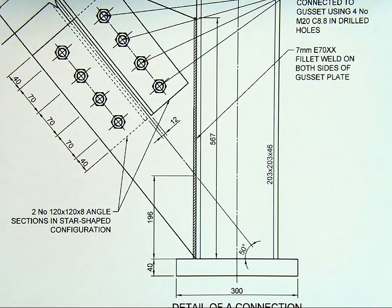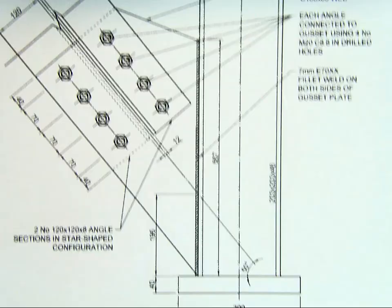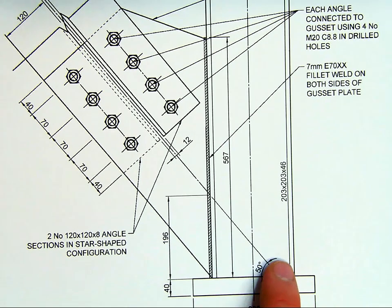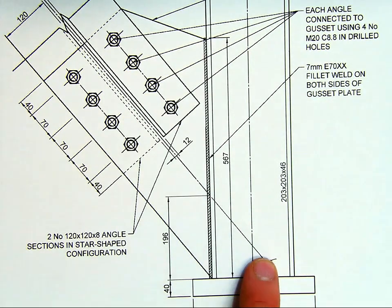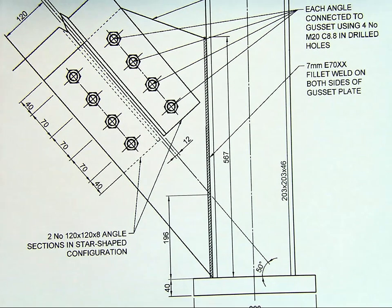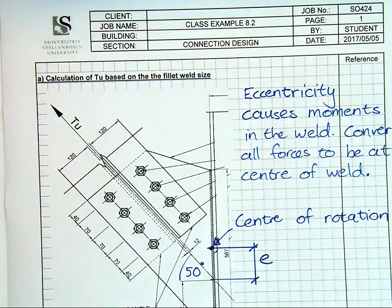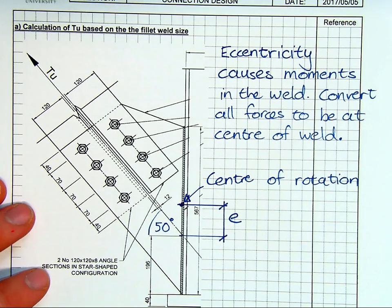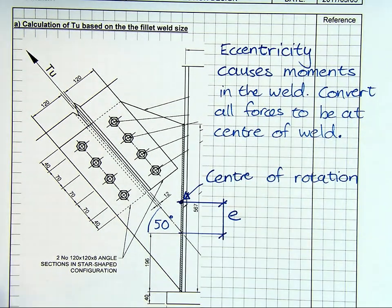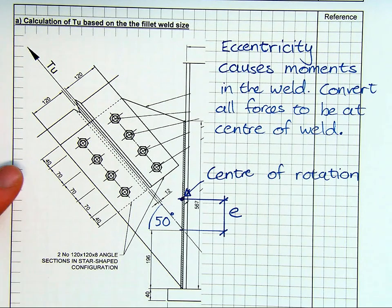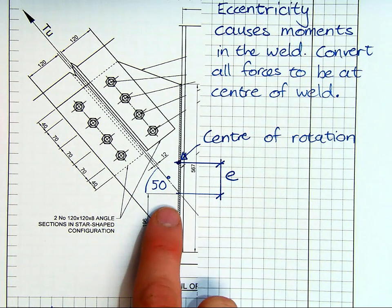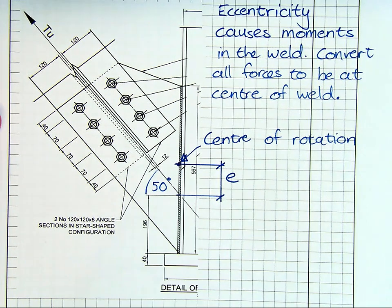Because when the force is applied, this Tu force, applied to the connection, it is applied along this line, which is off the middle of this weld. So it's actually going to twist the weld and cause moments in it. So having a look at our problem, calculation of Tu based on the fillet weld side. Eccentricity causes moments in the weld. Convert all forces to be at the center of weld. So there's our center of rotation of the weld. We've got some force Tu acting at 50 degrees.